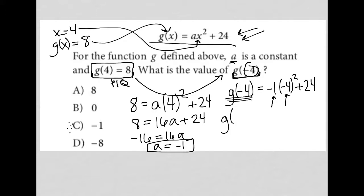If we continue on, g(-4) is equal to -16, right? Because -4 times -4 is positive 16. Positive 16 times -1 makes it -16. We add 24 here. And therefore, g(-4) is equal to positive 8. And that is answer choice A.